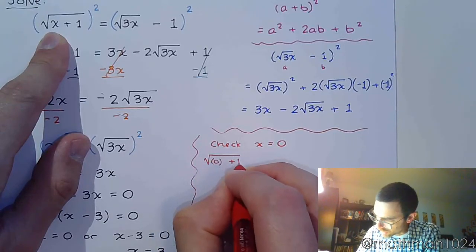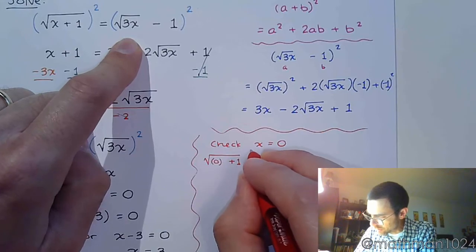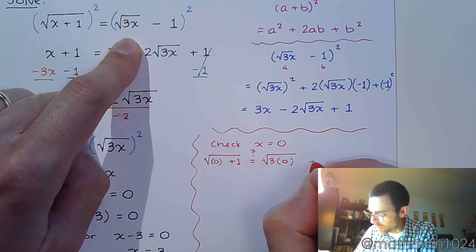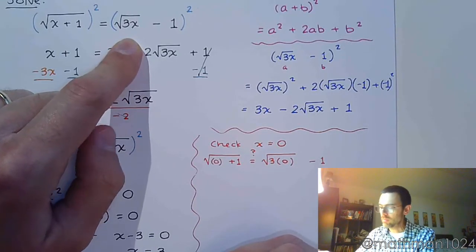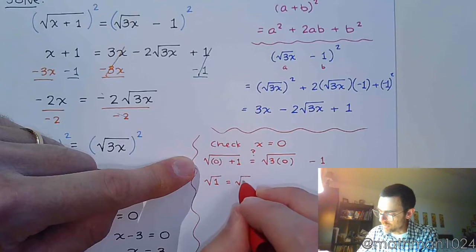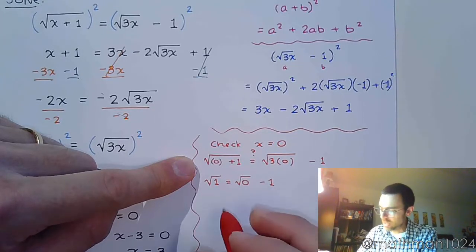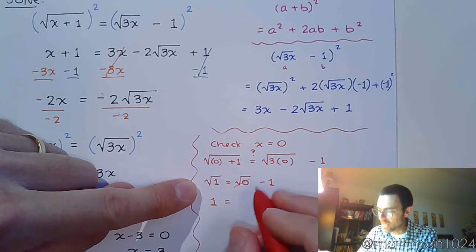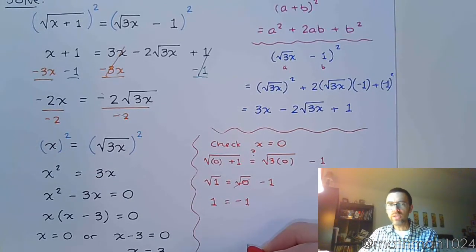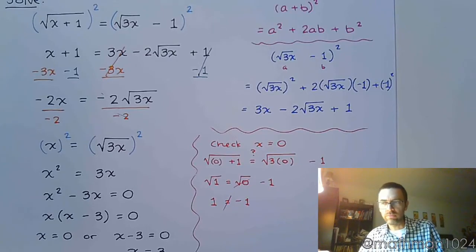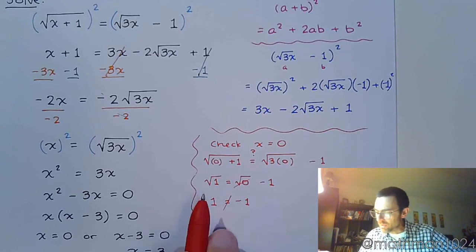I want to see is the square root of 0 plus 1 equal, does that equal the square root of 3 times 0 minus 1. Let's see, this gives me the square root of 1, that's the square root of 0 and then minus 1. So this gives me 1, that's 0 so you know who cares about that guy and we get negative 1. So we can see here that these guys are, they're not equal.